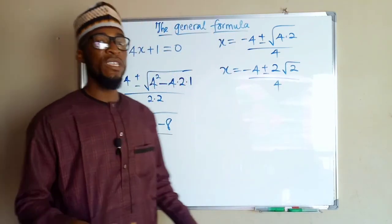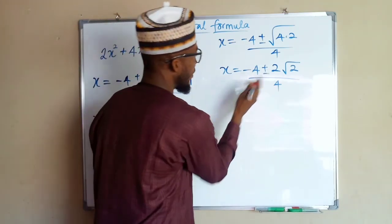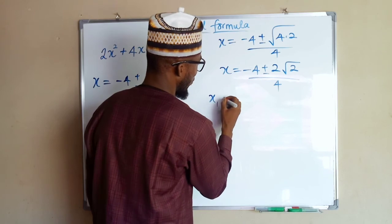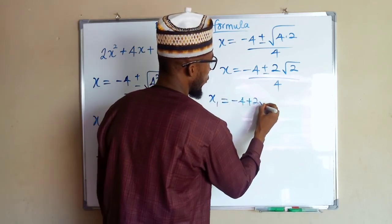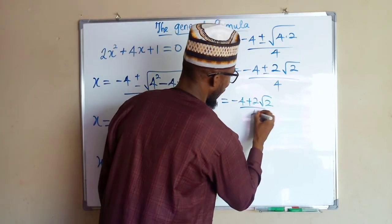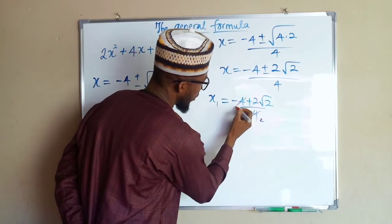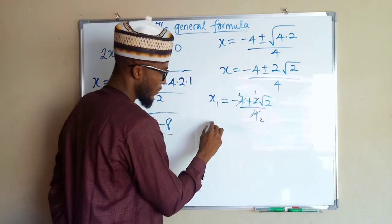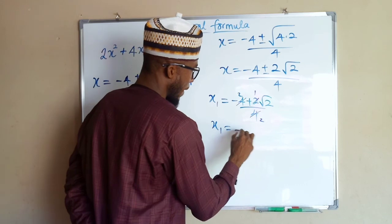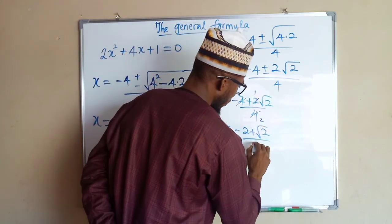You know generally a quadratic equation has two solutions. So we are going to break this down. Our first x1 will be equal to minus 4 plus 2 root 2 over 4. 2 can go here, 2 times 2 can go here. x equals minus 2 plus root 2 over 2.